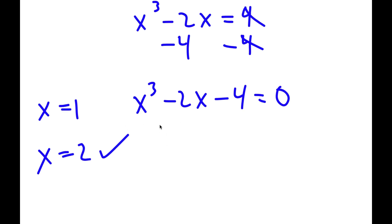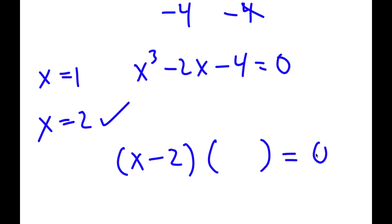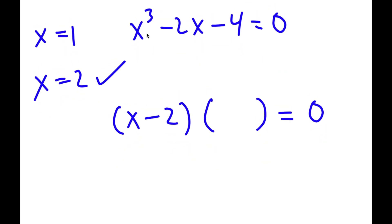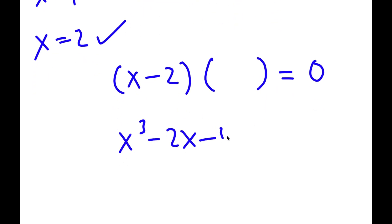Now that I know x equals 2 is a solution, this means that x minus 2 is going to be a factor. So I have x minus 2 times something is equal to 0. This means that if I divide x cubed minus 2x minus 4 by x minus 2, I should get the value of that other factor.